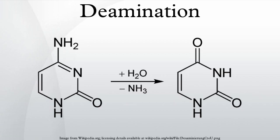Deamination of guanine results in the formation of xanthine. Xanthine, in a manner analogous to the enol tautomer of guanine, selectively base pairs with thymine instead of cytosine. This results in a post-replicative transition mutation, where the original G:C base pair transforms into an A:T base pair.